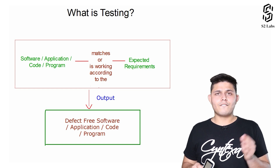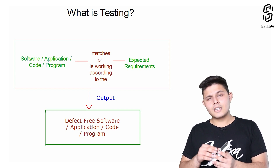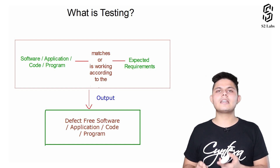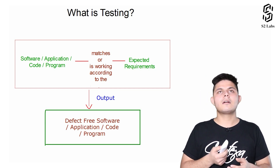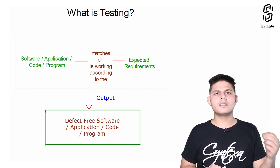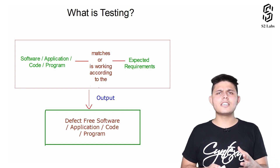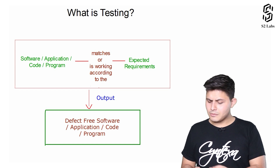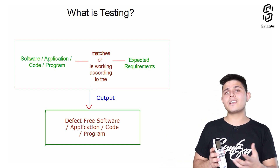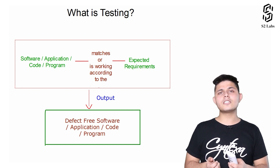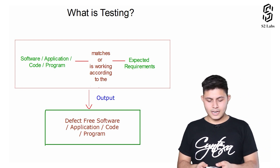Whether or not this button is working correctly is something we need to test — by pressing it again and again, verifying that if the AC is off, pressing the button turns it on, and if the AC is on, pressing it turns the AC off. Similarly, for other buttons we have different requirements, and we can test them all by making different combinations.